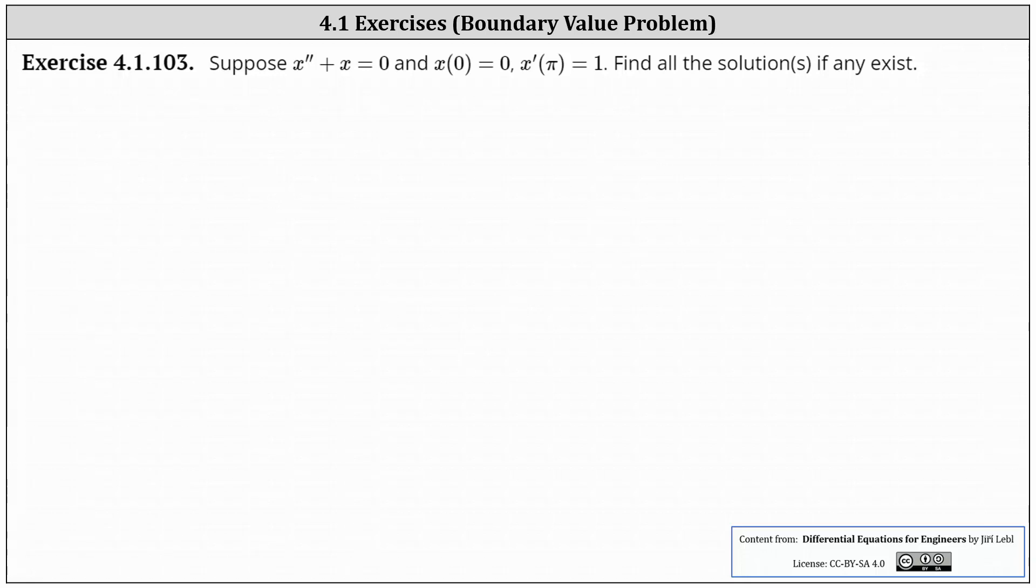We want to solve the given boundary value problem. Suppose x double prime plus x equals zero, and x of zero equals zero and x prime of pi equals one. We're asked to find all the solutions if they exist.